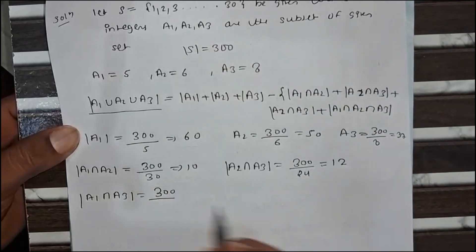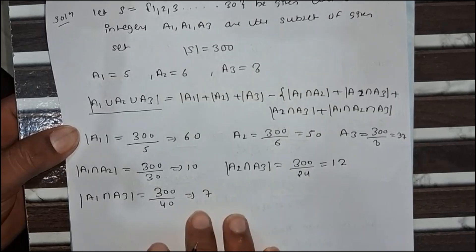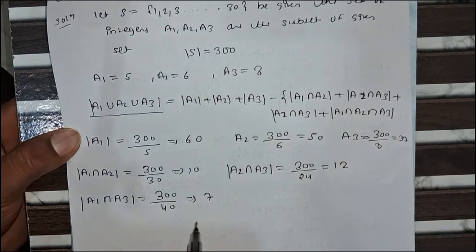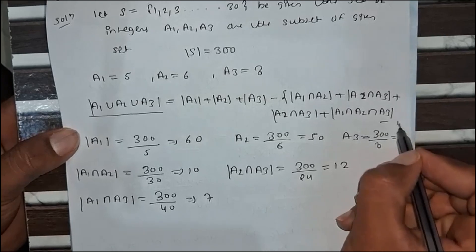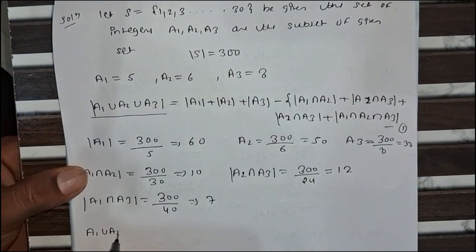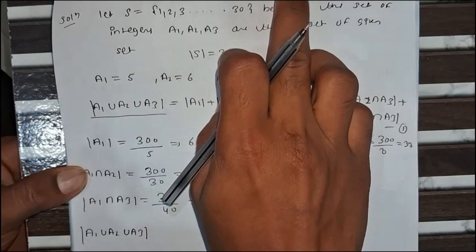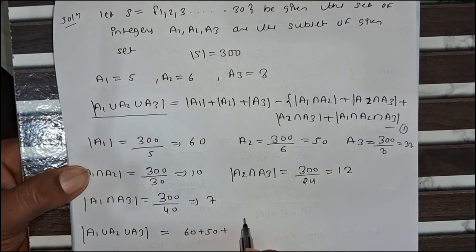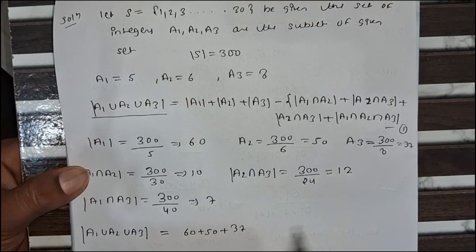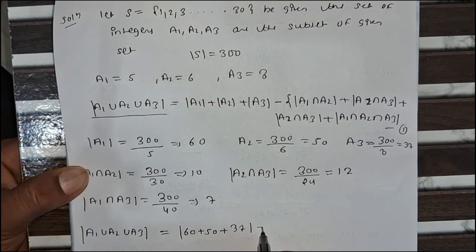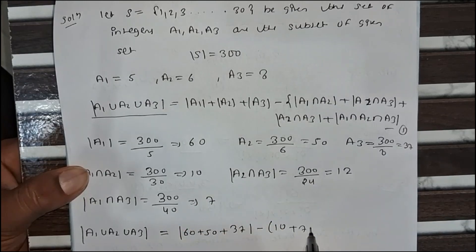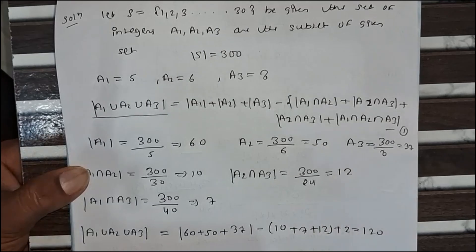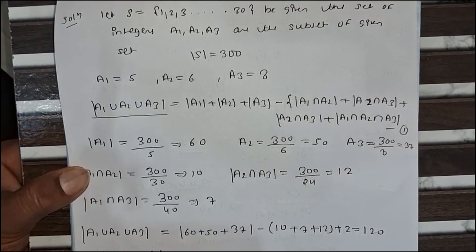For A1 ∩ A3, LCM(5, 8) = 40, so 300 divided by 40 = 7. Now putting the values into the formula: |A1 ∪ A2 ∪ A3| = 60 + 50 + 37 - 10 - 7 - 12 + 2 = 120. So the value of A1 union A2 union A3 equals 120. This is the answer for the condition of at least one.